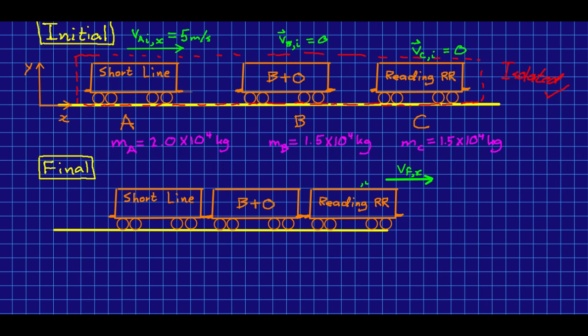So we know that the momentum of the system is going to be conserved throughout this whole process. And so we can write that the momentum initial, the total, and I'm only going to work in the x component because everything is along our x direction. So our initial x component of momentum is going to equal our total final momentum, which is just going to be the momentum of the three cars together.